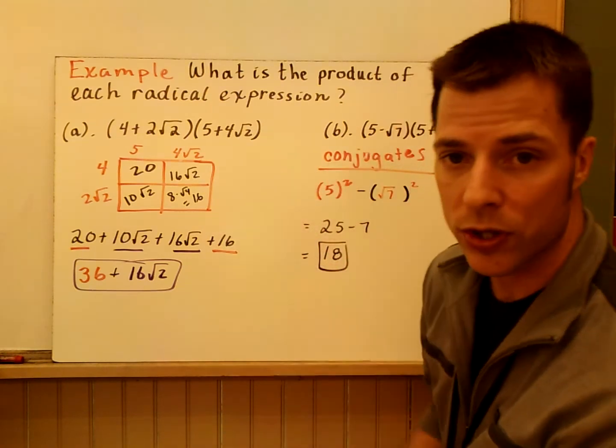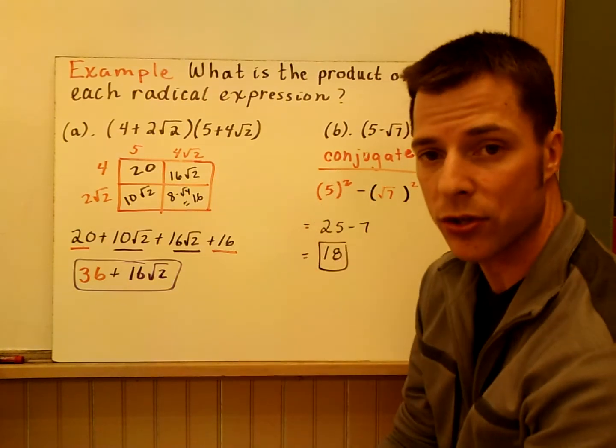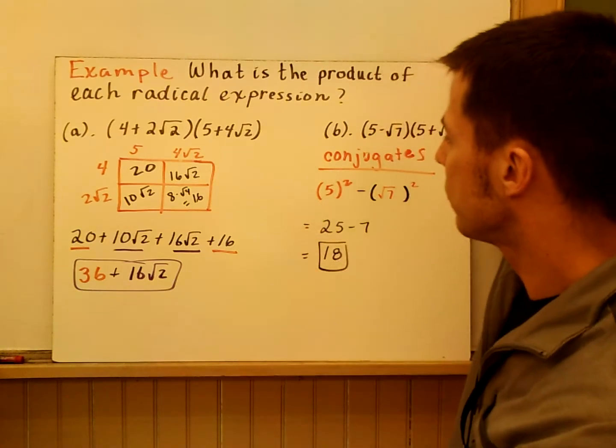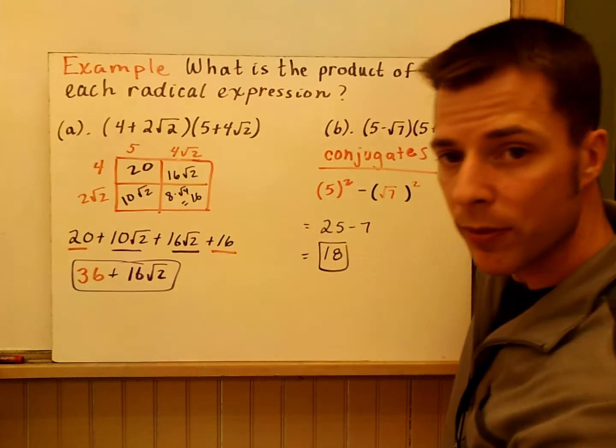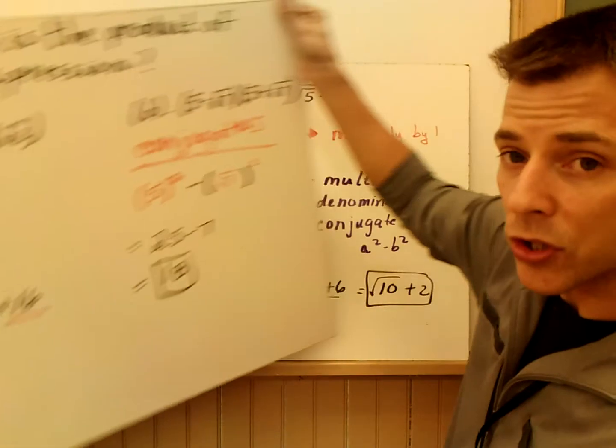The box method would have shown you the same thing. But be careful with those conjugates. Those are really important later on. So just try to follow that rule. Square the first term and the second term and put subtraction in between them.